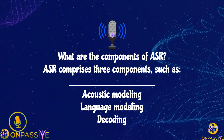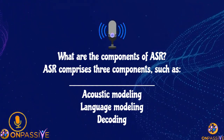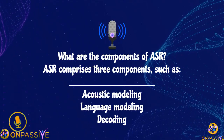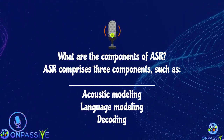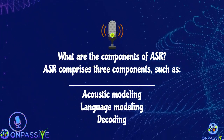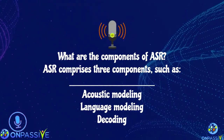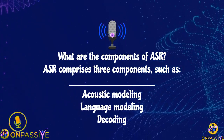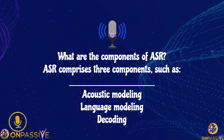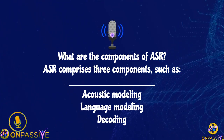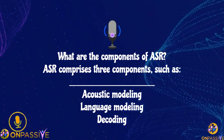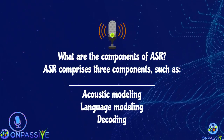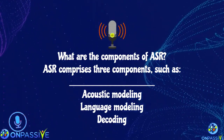ASR uses diverse datasets to accommodate accents and different pronunciations. Language modeling involves understanding language structure and grammar using n-grams and advanced neural networks. The decoding stage combines outputs from both models to generate the most probable transcription. Optimization during this stage minimizes the word error rate, enhancing ASR accuracy.